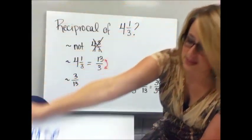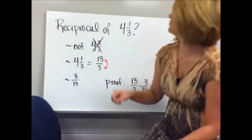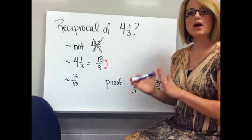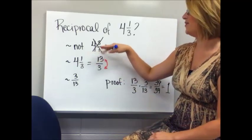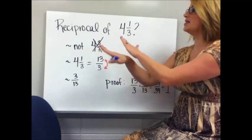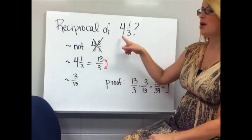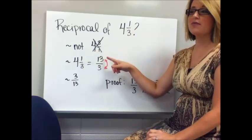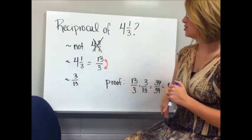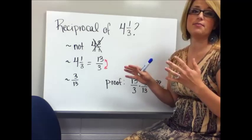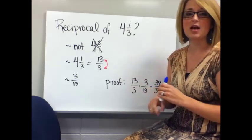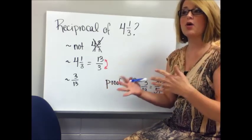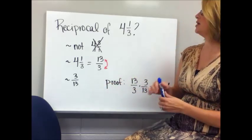Let's practice finding reciprocals. If I want the reciprocal of 4 and 1 third, a common misconception is to say it's 4 and 3 over 1. That's not correct, because if I multiply 4 and 1 third by 4 and 3 over 1, I'd get something around 100 — definitely not 1. Remember, a number and its reciprocal must have a product of 1.